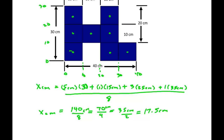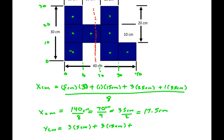So the center of mass along x lies at 17.5 cm, which makes sense — it's as if you had the full H-shape centered, with the extra piece pulling it slightly to one side. For the y direction, we have three balls at 5 cm, three balls at 15 cm, and two balls at 25 cm, all over 8.